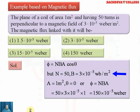N is the number of turns, that is 50. B is the magnetic field or magnetic induction, that is 3×10⁻⁵ Webers per meter square. The area of the coil is 1 meter square. Now, the question states the coil is perpendicular to the magnetic field, so theta must be taken as 0, and cos 0 equals 1.